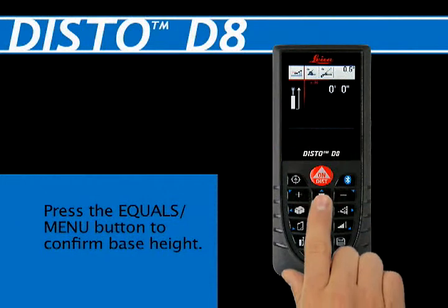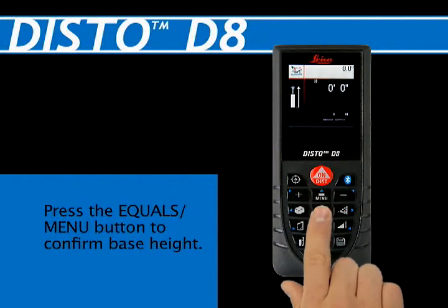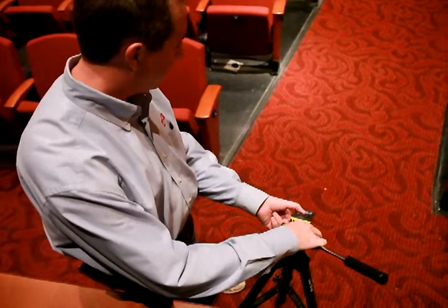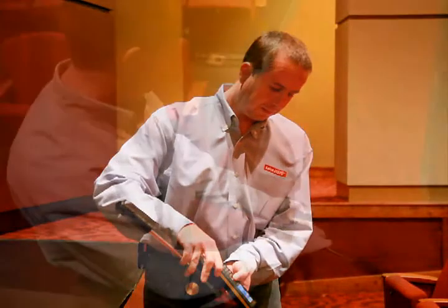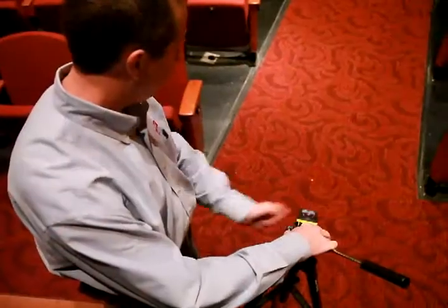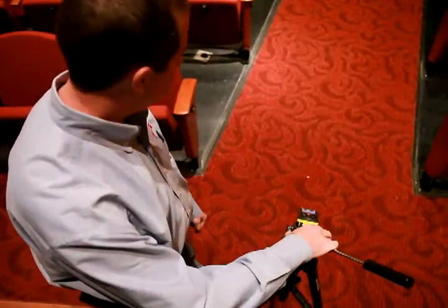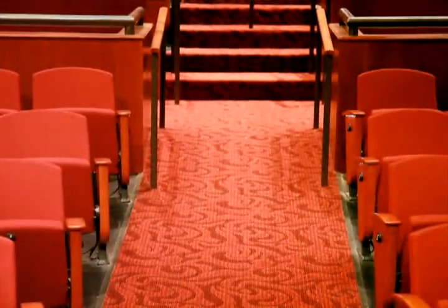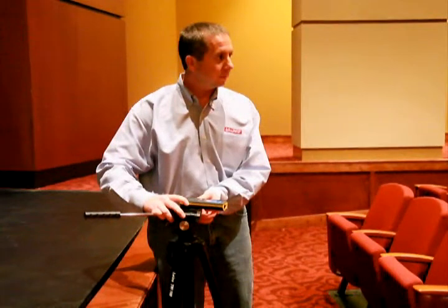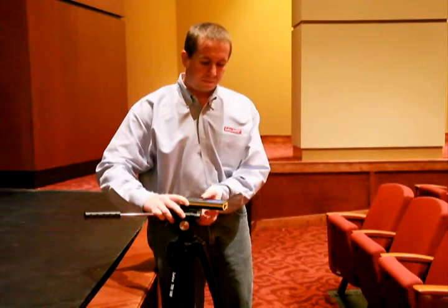Press the equals/menu button to confirm the height. Aim the red laser dot at the reference point and press the ON/DIST button to record the angle and distance. Then aim the red laser dot at a profile point and press the ON/DIST button to record the distance and height.